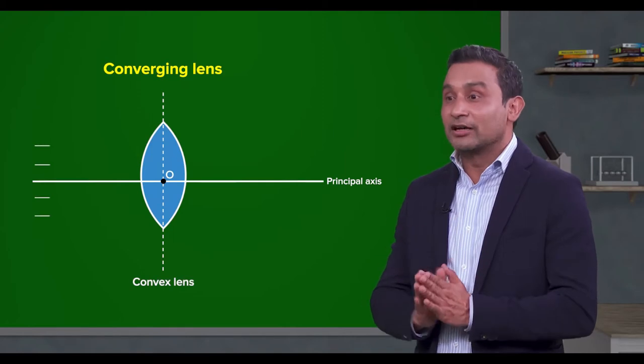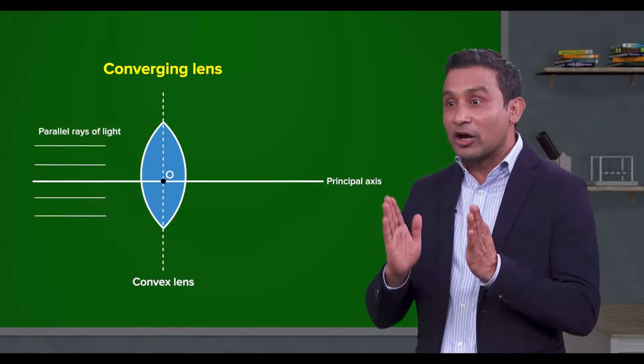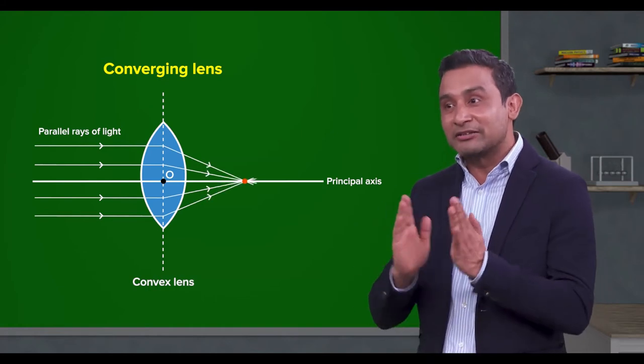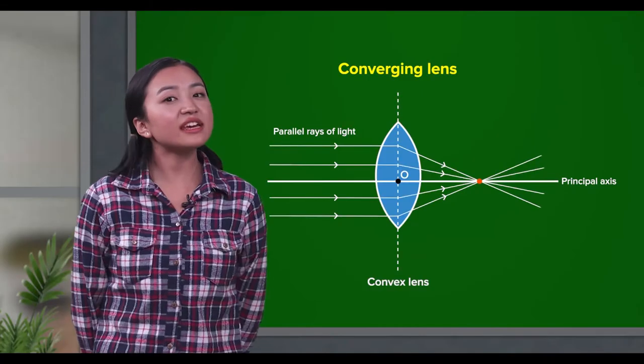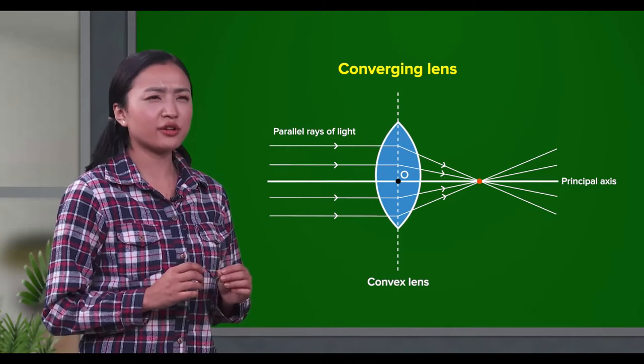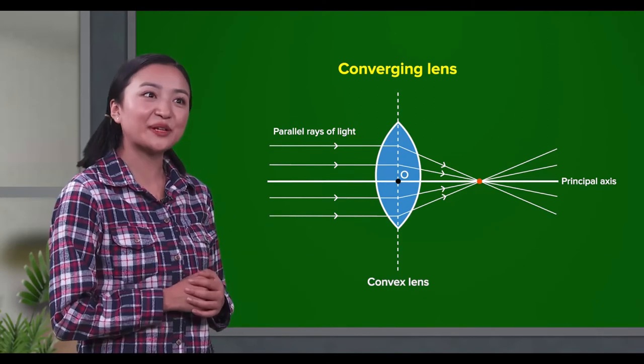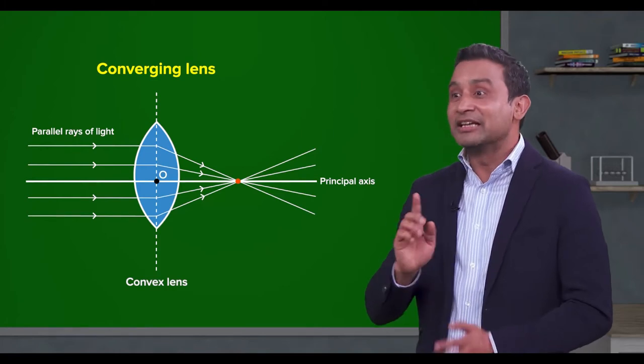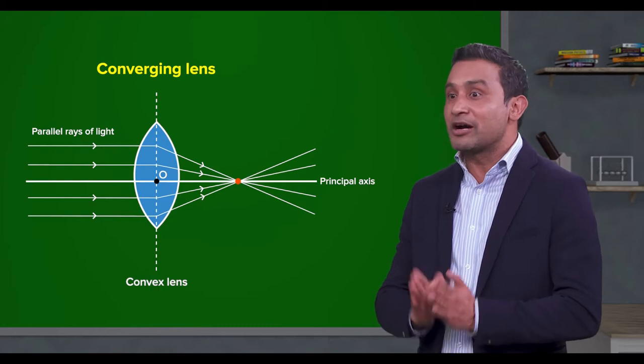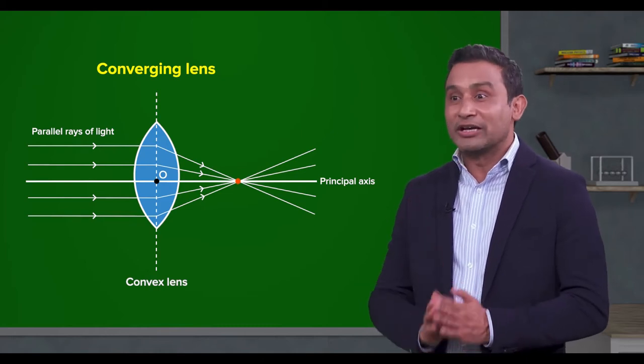Principal axis, parallel rays of light pass through the convex lens and are bent. These rays converge at the principal axis at this point. This point will be the principal focus.